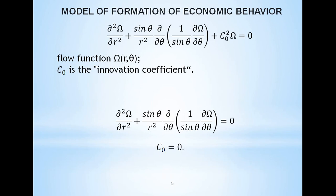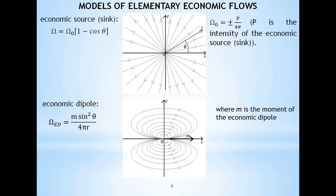If the innovation coefficient is equal to 0, then the equation is simplified. Some of the solutions to the last equation have been proposed as models of constructs, combinations of which can be used to build models of economic behavior.